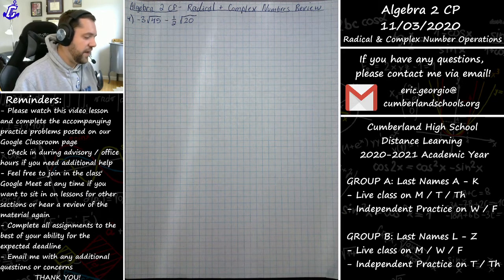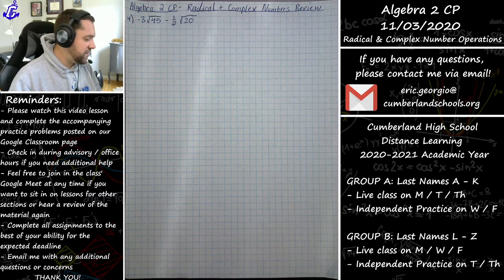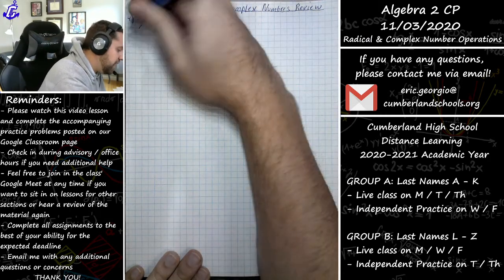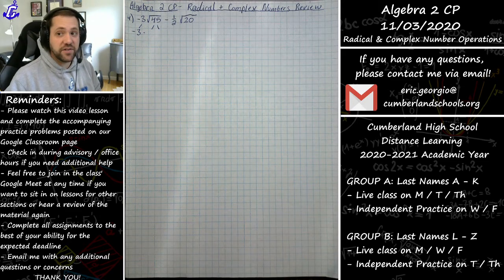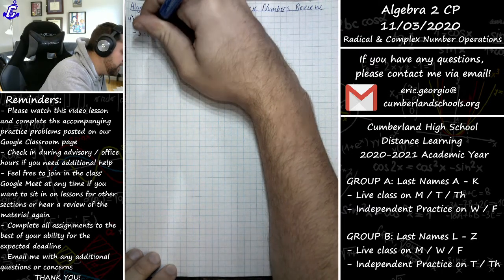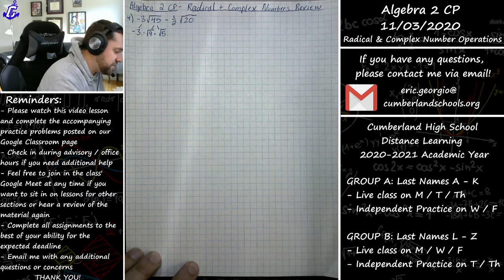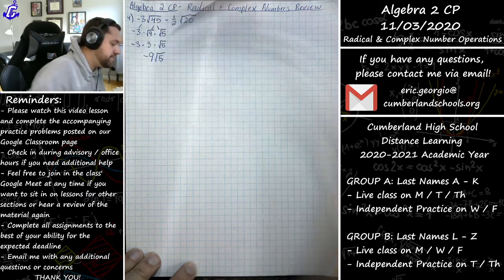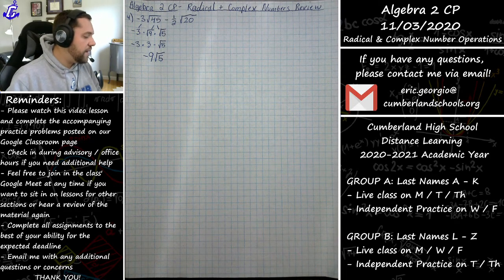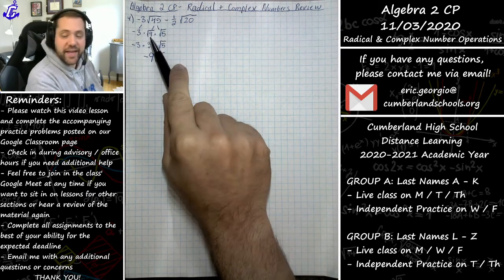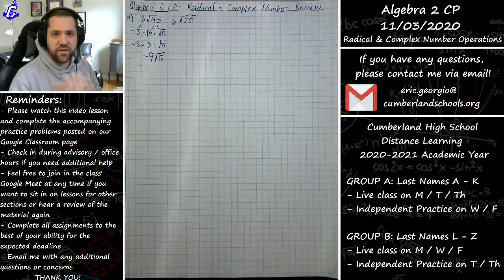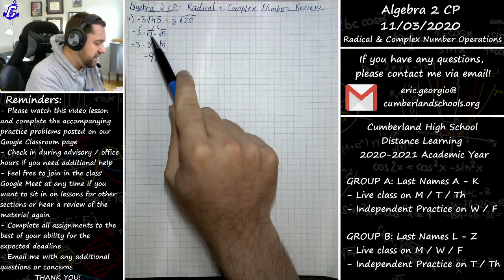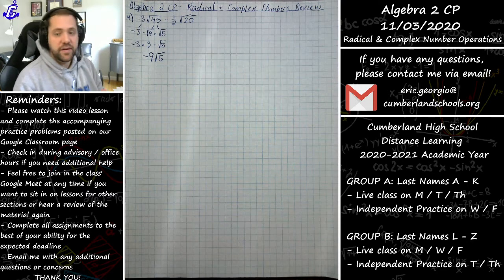Starting with problem 4 — this is one of our transformer-type problems where they don't look like like terms at the start, but when we simplify them we find they can be combined. Breaking down the square root of 45: the biggest perfect square factor is 9, so we get √9 × √5. The square root of 9 is 3, so this becomes negative 3 times 3 times √5, or negative 9√5.